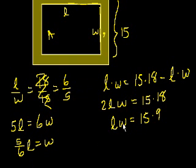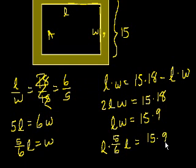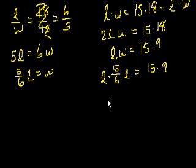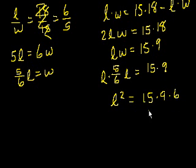Now let's substitute that into this equation. So we have L times W, which is 5 over 6L, equals 15 times 9. Let's multiply both sides by 6 over 5.